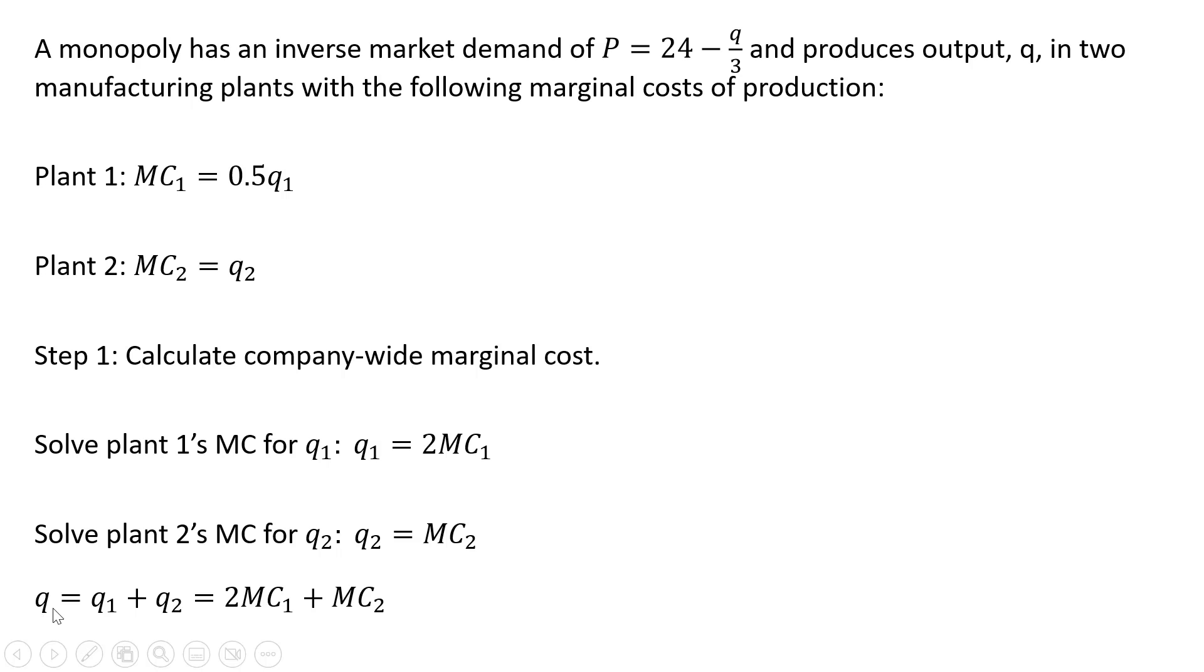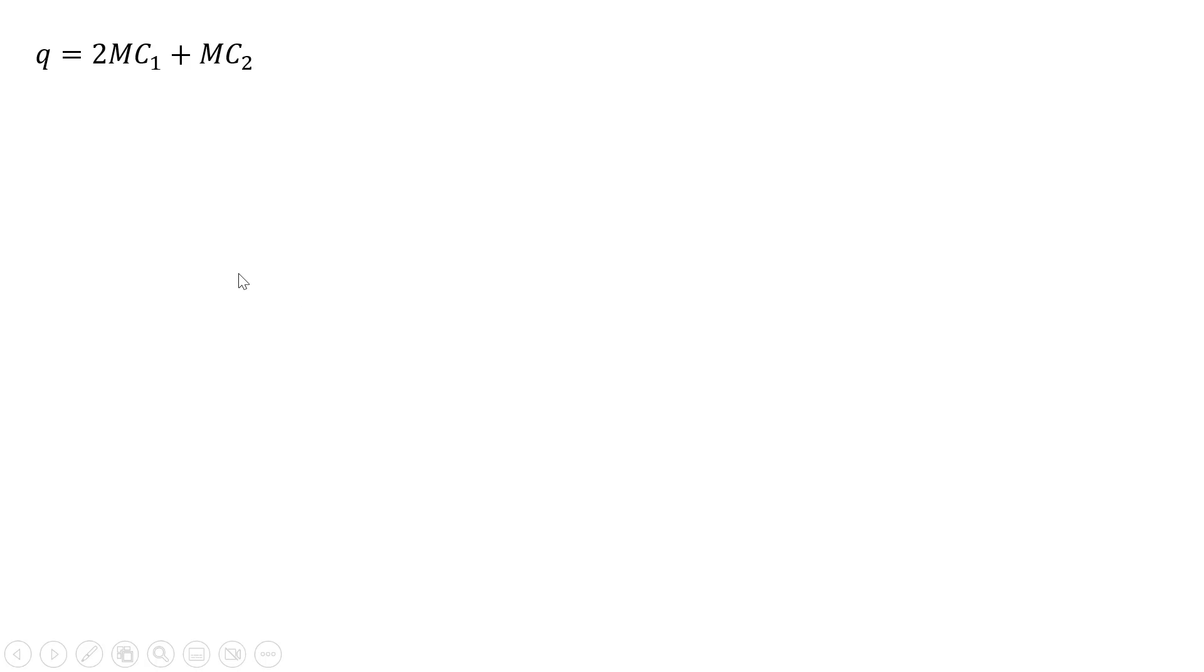The total output of the firm, Q, equals the output in plant one plus the output in plant two. So we're going to add up our two Q equations, the Q subscript one plus Q subscript two, making our substitutions into this formula. Just rewriting, we're going to drop the subscripts. And now adding up the marginal cost, the firm's output equals three times the marginal cost.